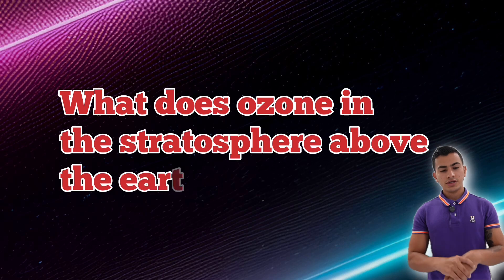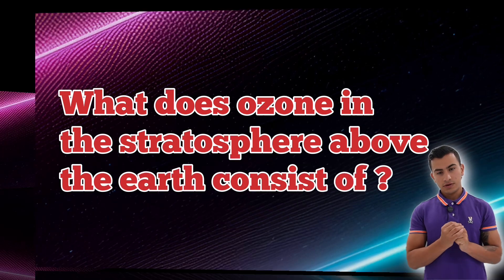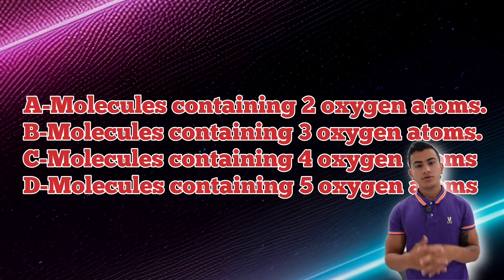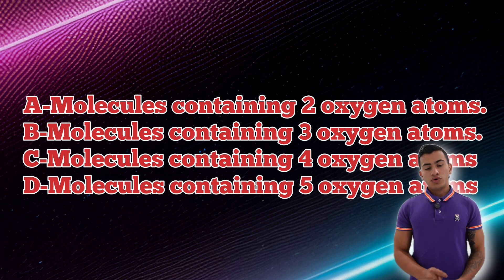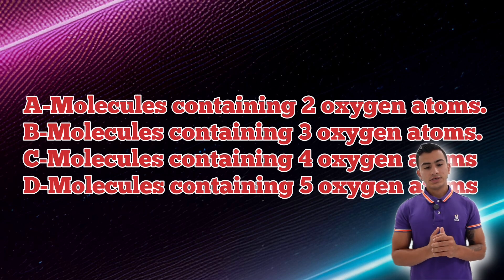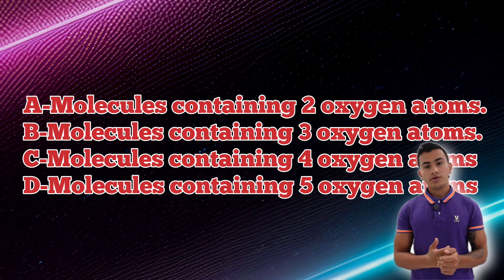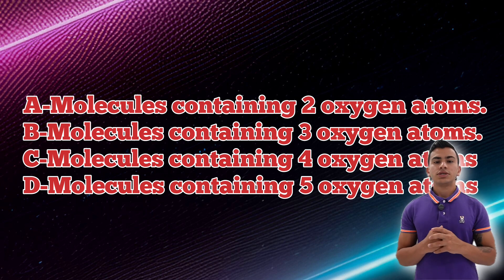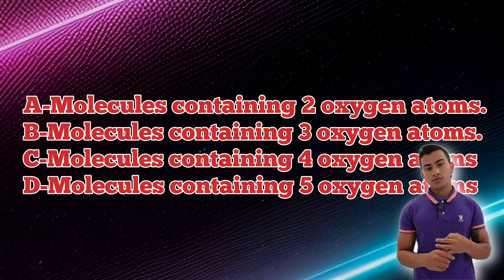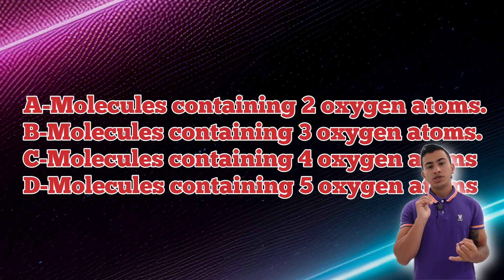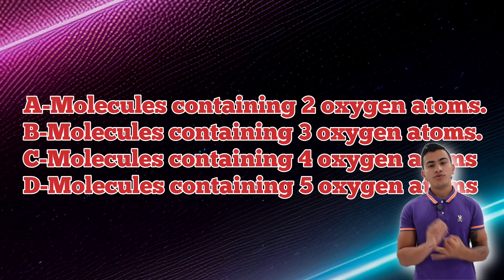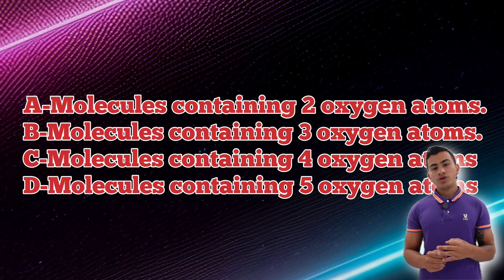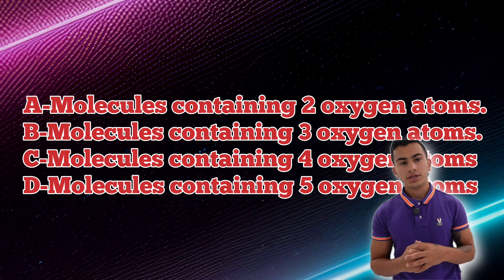What does the ozone in the stratosphere above the earth consist of? This question is simple if you have gone to school or are going to school. The stratosphere above the earth consists of oxygen atoms and each oxygen atom has three molecules. It's not going to be two, four, or five molecules — it's going to be three molecules, and that will be the answer.